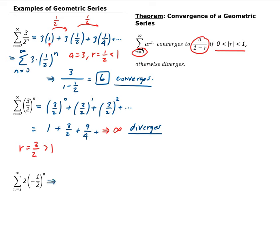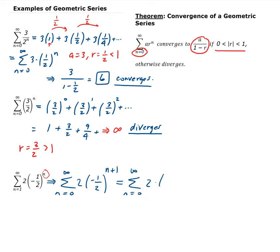This series can be rewritten as the summation from 0 to infinity. We subtract 1 from the index, so we add 1 to the exponent, giving us 2 times negative 1 half, all raised to n plus 1. We then split this using the algebraic rule for same-base exponents: 2 times negative 1 half to the n times negative 1 half to the first power.